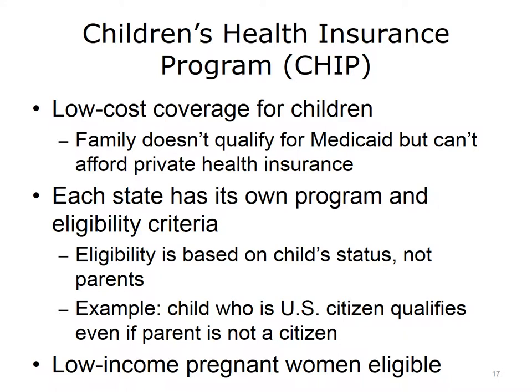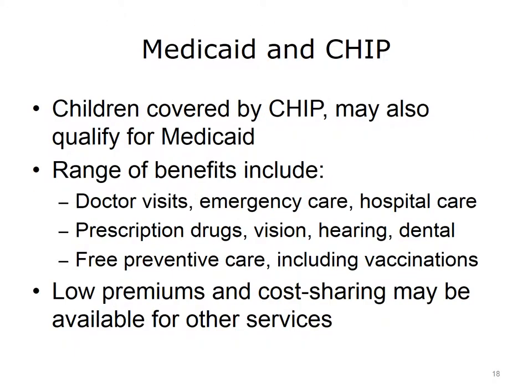The third government insurance program is the Children's Health Insurance Program, or CHIP, also administered by CMS. It provides low-cost health insurance coverage to children in families that earn too much to qualify for Medicaid but cannot afford private health insurance. Each state administers its own program with its own eligibility criteria based on the child's status, not the parent's. Pregnant women with low incomes may also be eligible for CHIP. Children covered by both CHIP and Medicaid receive a range of benefits including doctor visits, emergency care, hospital care, prescription drugs, and vision, hearing, and dental care. Children also get free preventive care such as vaccinations. For other services, families may pay low premiums and deductibles.